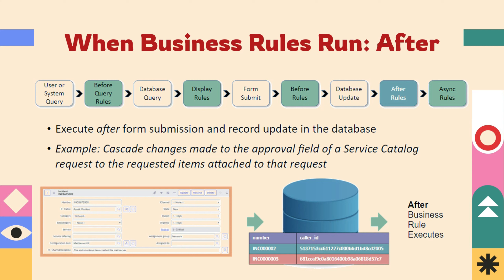The after business rule executes after form submission and when the record is updated in the database. For example, we can cascade changes made to the approval field of a service catalog request to the requested items attached to that request. Whatever changes have been made to the request approval field, the same will be reflected on the relevant requested items. This executes under the after business rule.